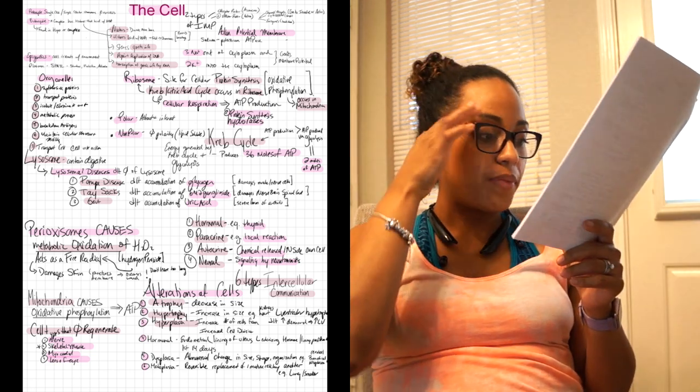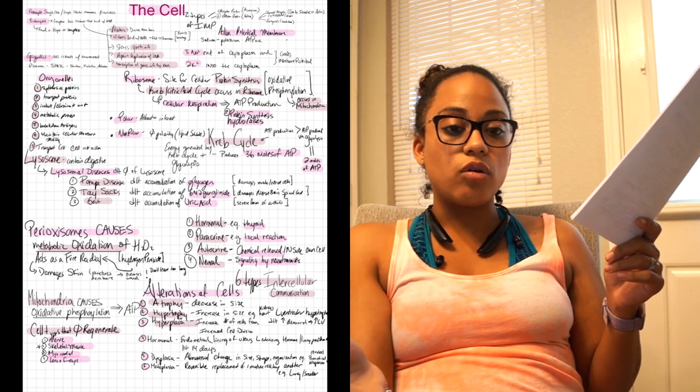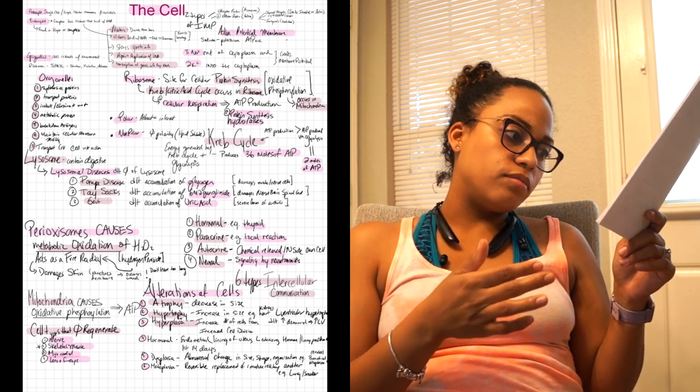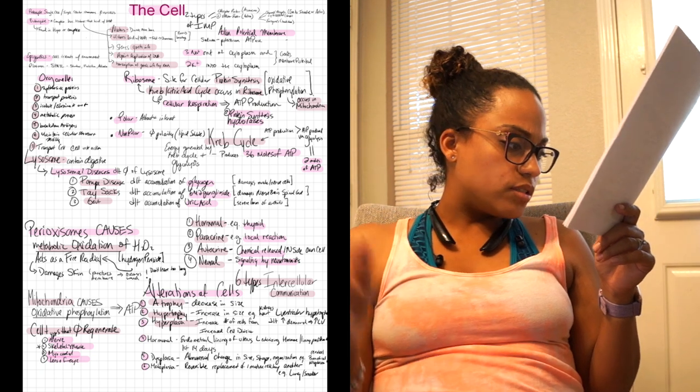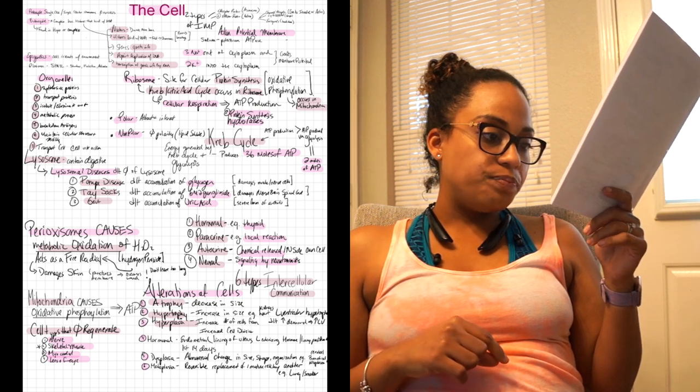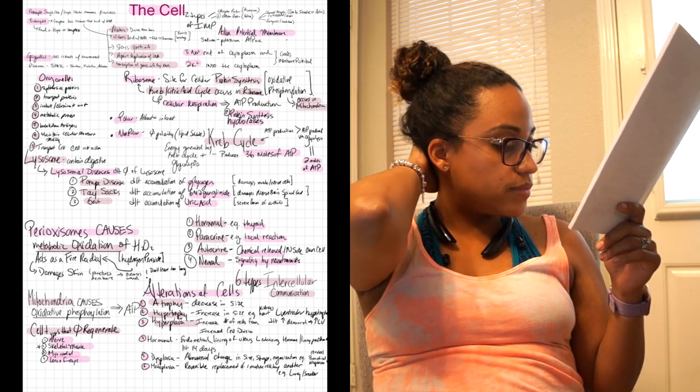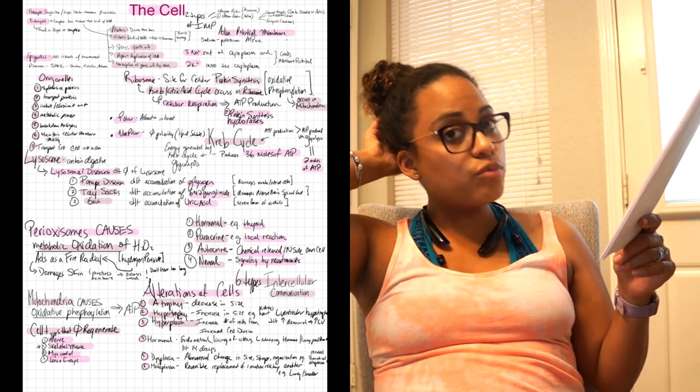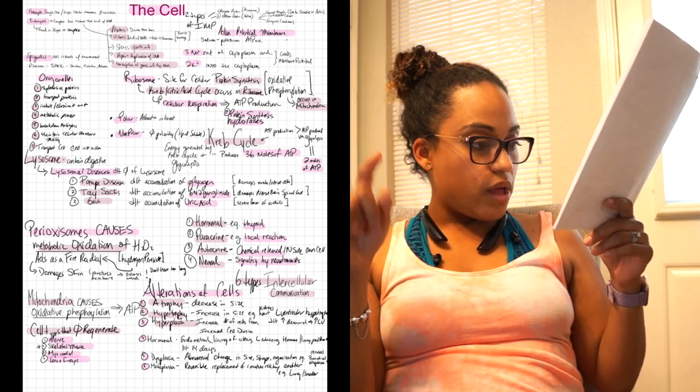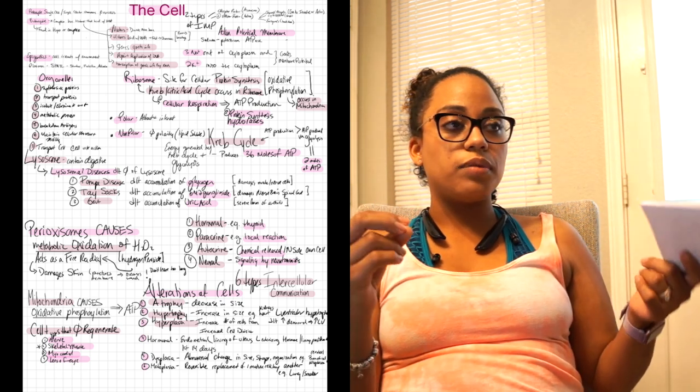Hormonal, this was referencing like the whole menstrual cycle, the luteinizing hormone and then how your lining proliferates, and that's every first 14 days. Dysplasia: abnormal change in size, shape, or organization. The example that they had was cervical, bronchial, or related to neoplasms. Dysplasia, abnormal change.